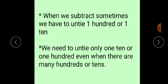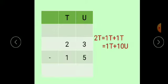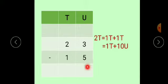Now children, in this lesson we will do subtraction by borrowing. For subtraction by borrowing, when we subtract, sometimes we have to untie 100 or a 10. We need to untie only a 10 or 100, even when there are many hundreds or tens. Now, the first example is 23 minus 15. This number 3 is smaller than 5, so we subtract by untying.